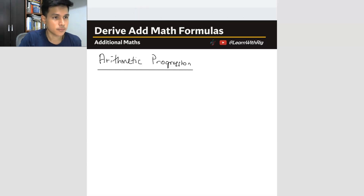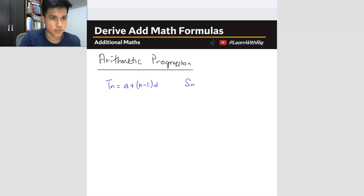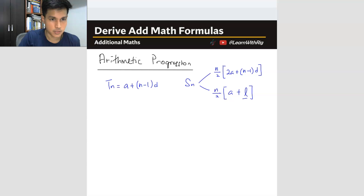So the two formulas for arithmetic are: the TN formula, TN equals A plus (N minus 1) times D. That's the TN formula. Then you also have the SN formula — there are two. The first formula is N over 2 bracket (2A plus (N minus 1)D). The second one is N over 2 bracket (A plus L), where L is the final term, the last value. We are going to attempt to derive all three of these.